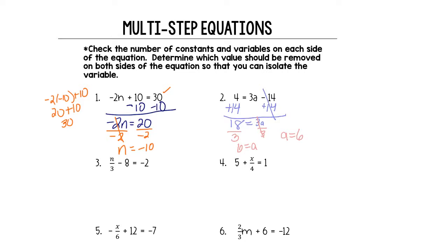Let's plug that into our equation and see if it checks out. 4 equals 3 times 6 minus 14. That's 4 is 18 minus 14. And 4 equals 4 — true. We did it.